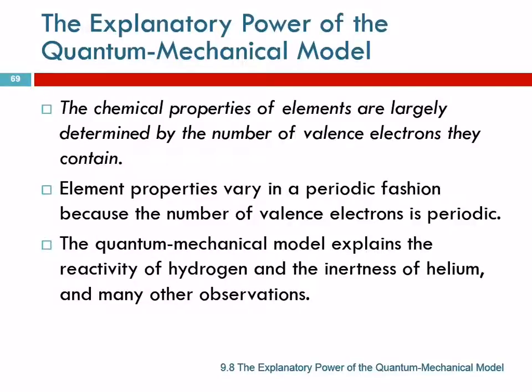The quantum mechanical model explains a lot about the periodic table and what elements do. The chemical properties of elements are largely determined by the number of valence electrons that each of those atoms has. We observe that element properties vary in a periodic fashion. That's because the number of valence electrons is periodic.